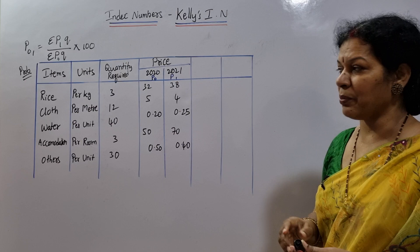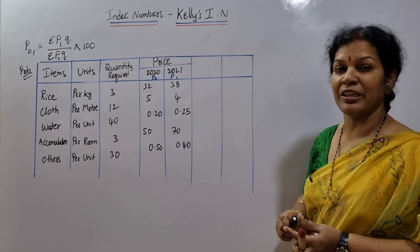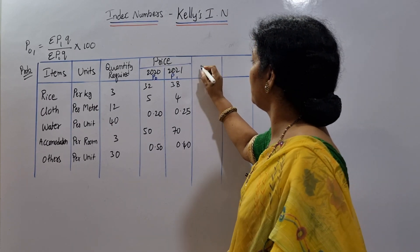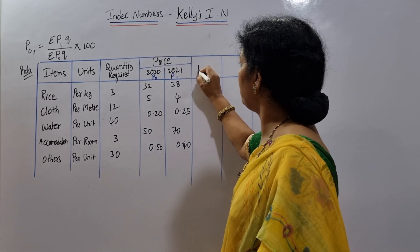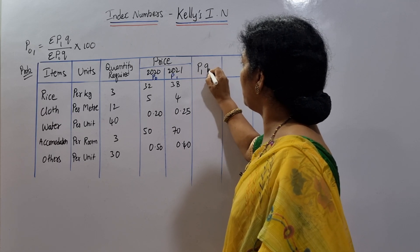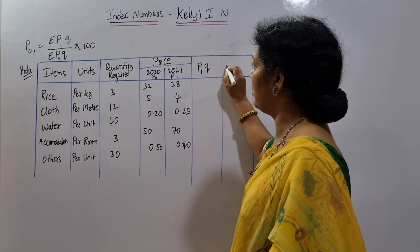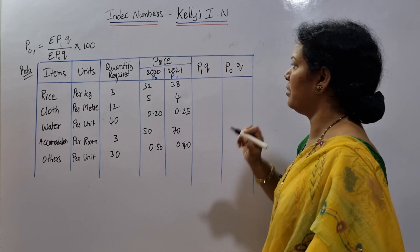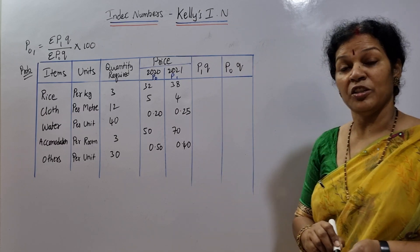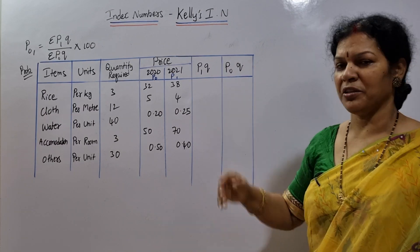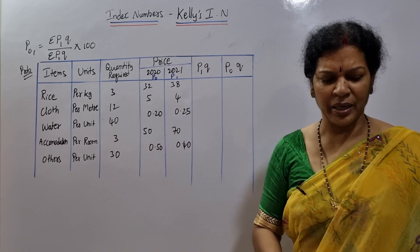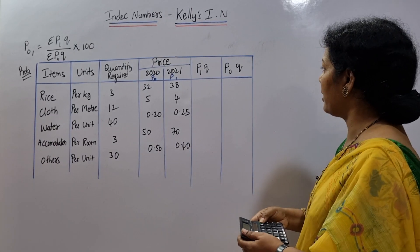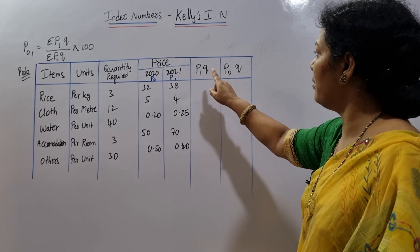As per the formula, what is required is P1Q and P0Q. Two columns are already provided; we'll calculate only those — P1 into quantity, and P0 into quantity. These two we have to calculate and apply in the formula. It's a very easy problem.